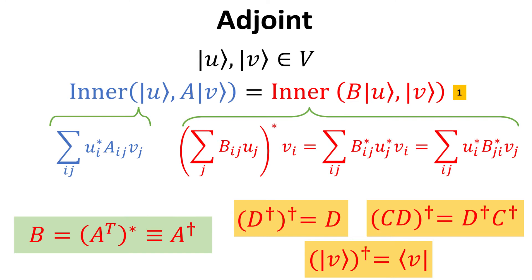These operators A and B can be expressed in terms of matrices, allowing us to evaluate the two inner products explicitly. By comparing expressions of these two inner products, we can see that the adjoint of A, which we denote as B, is simply the transpose conjugate of matrix A, as shown in the green box. Often, we denote the adjoint of a matrix with the superscript dagger.